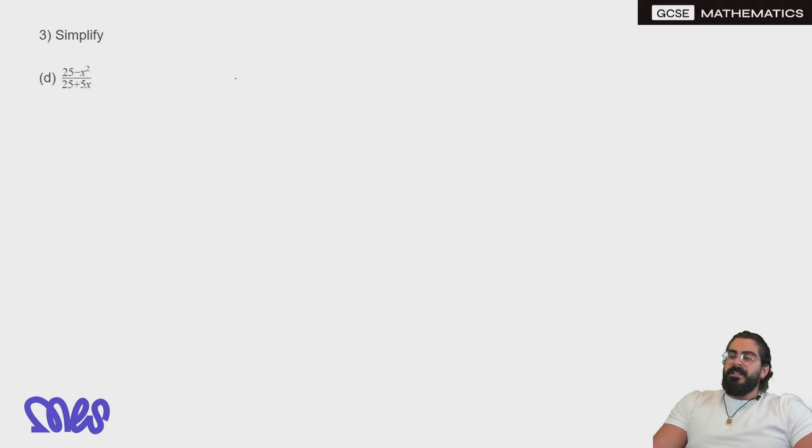Next one, 25 minus x squared. That's difference of two squares. So 25 is 5 times 5. We have x squared, which is just x times x. Then we have plus minus in any order. You could have written minus plus, that's not a big deal.